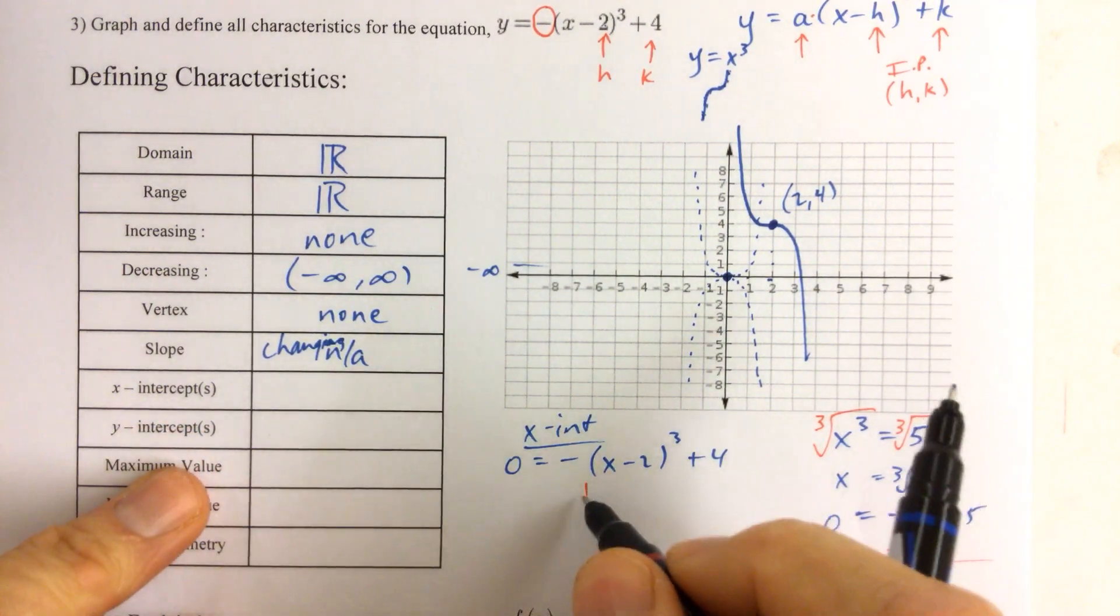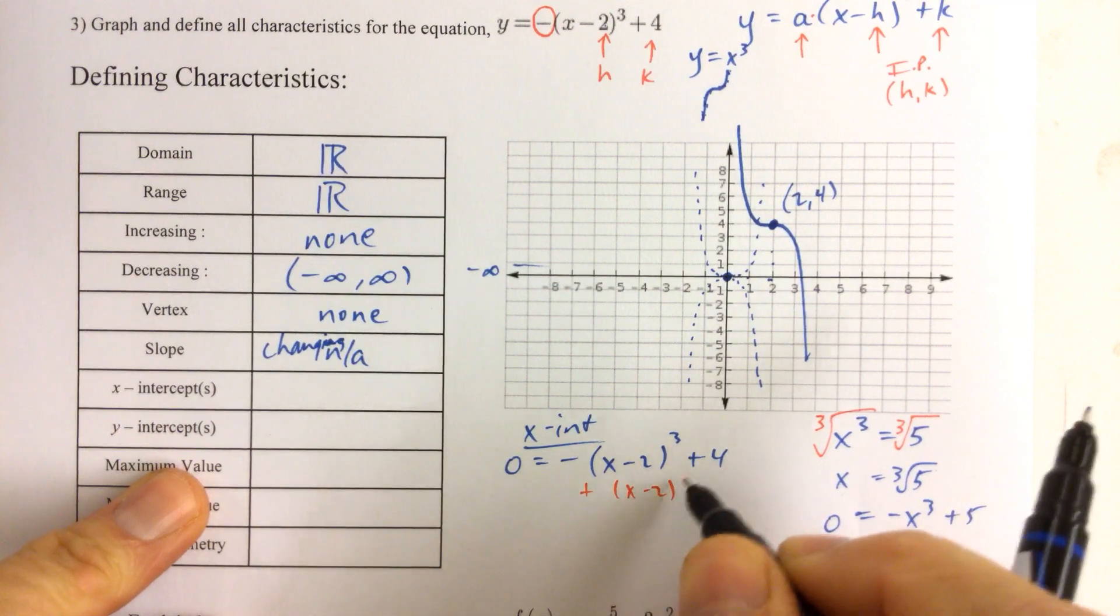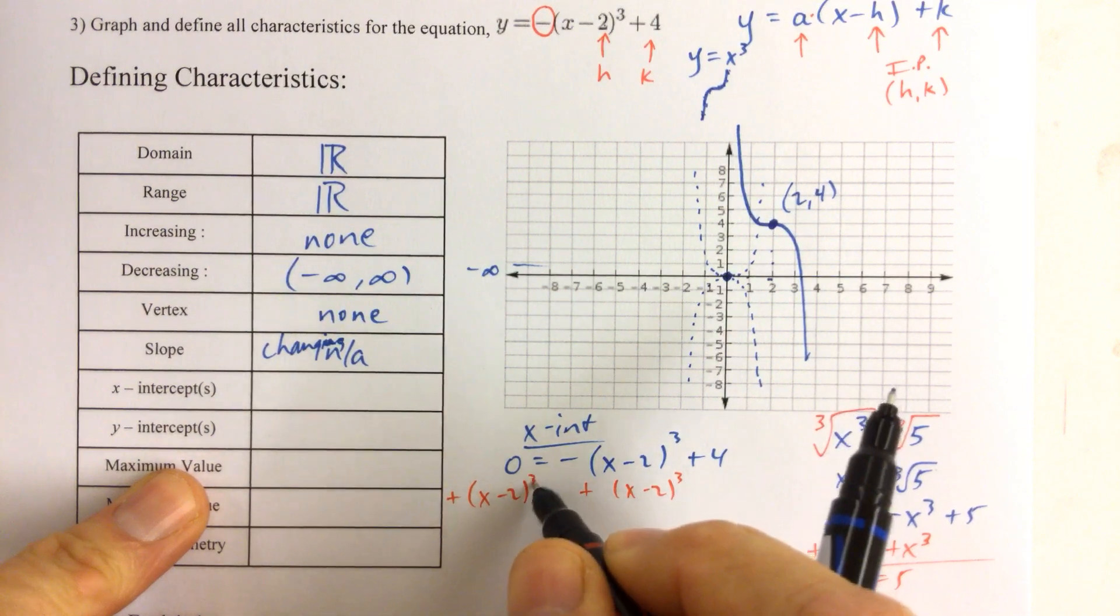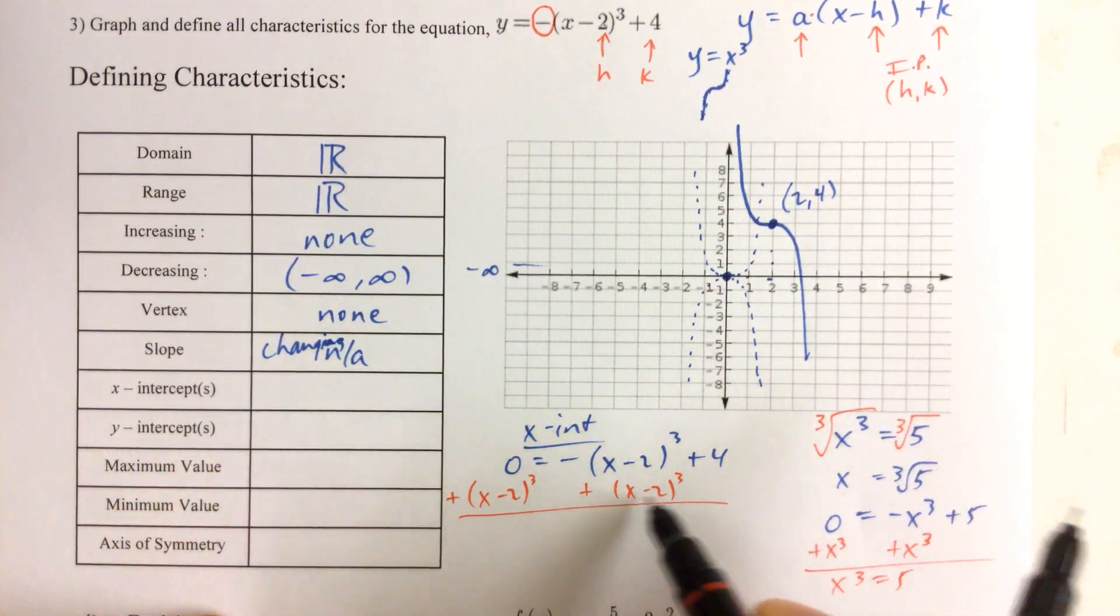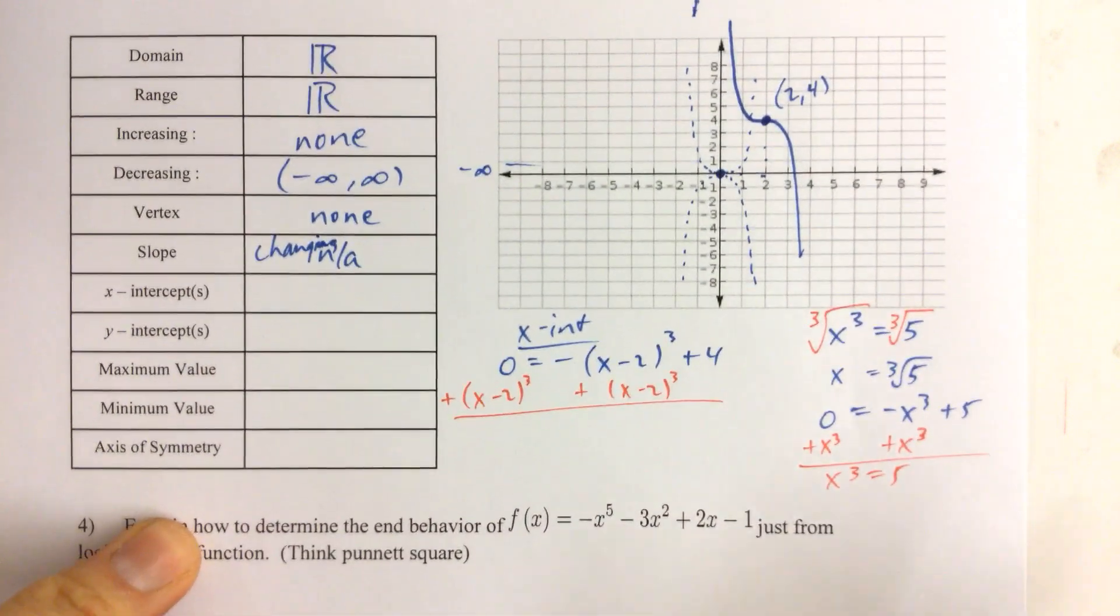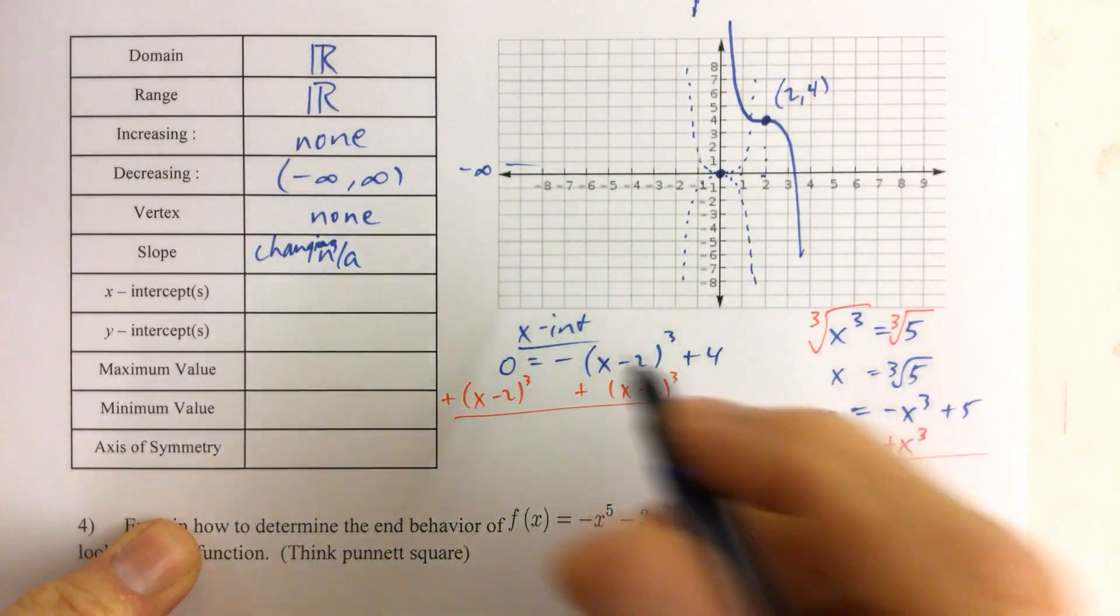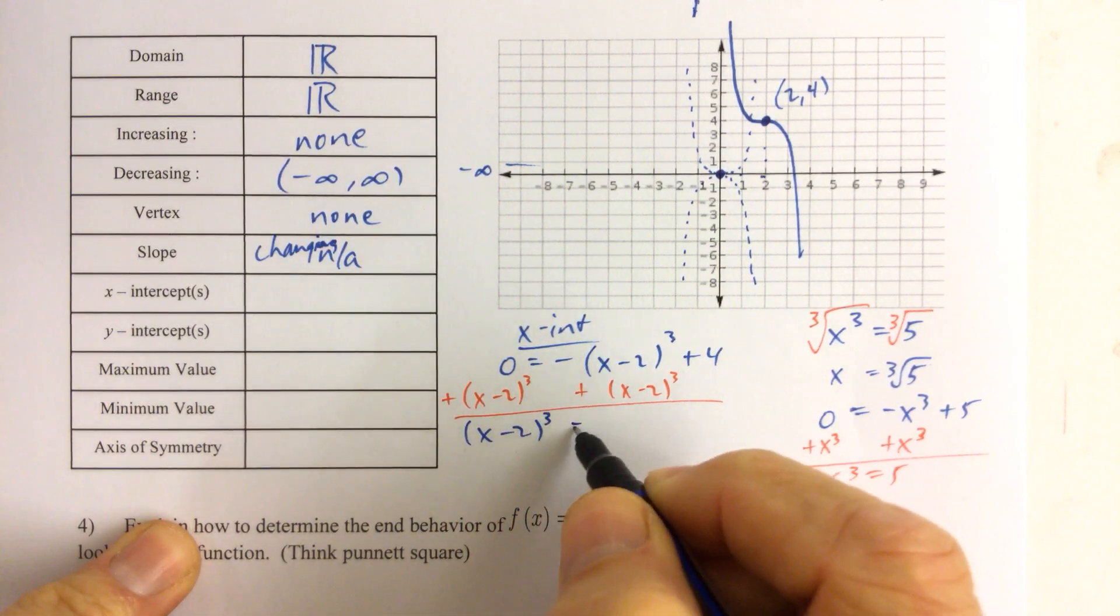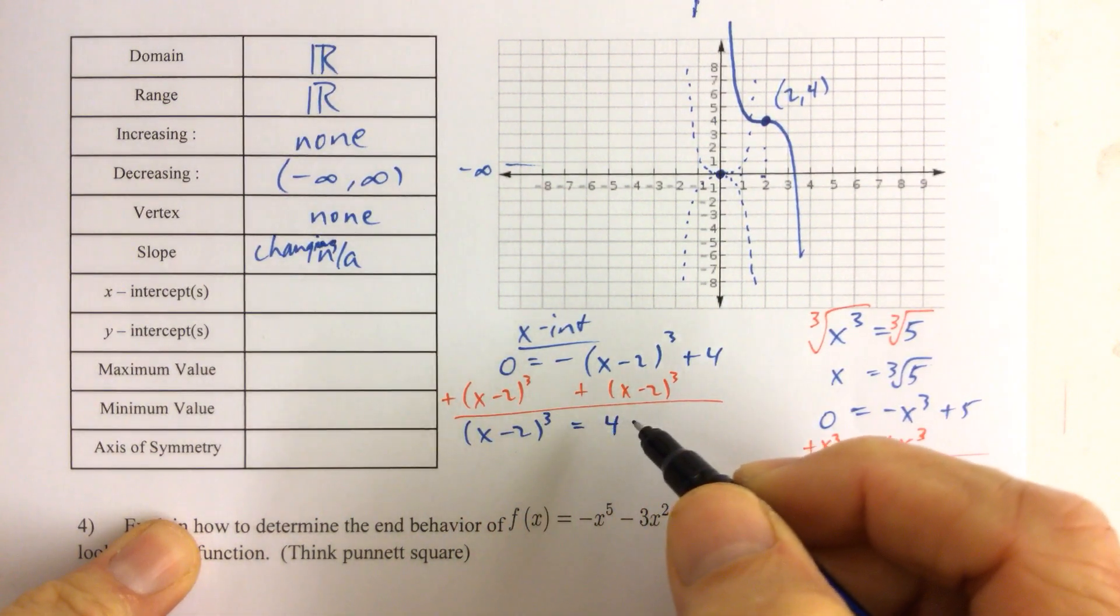Then we would add x minus 2 cubed to both sides. And that's okay to do that. In fact, I mean if you think about it, x minus 2 is as much of a real number as x is a real number. So you don't want to treat x minus 2 any differently than you would treat an x like over here.